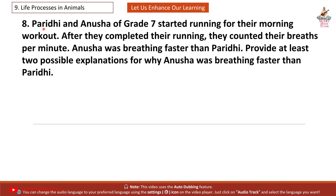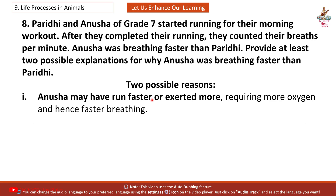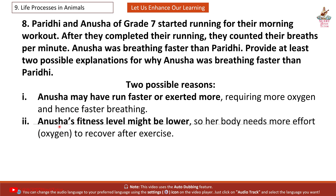Question 8: Paridhi and Anusha of grade 7 started running for their morning workout. After completing their run, they counted their breaths per minute. Anusha was breathing faster than Paridhi. Provide at least two possible explanations. Answer: First, Anusha may have run faster or exerted more, requiring more oxygen and hence faster breathing. Second, Anusha's fitness level might be lower, so her body needs more effort and oxygen to recover after exercise.